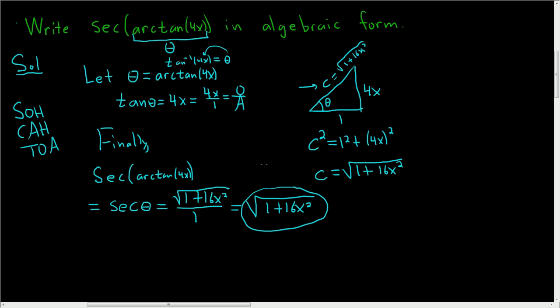And that's the final answer. So to recap, step 1, call this theta. Step 2, rewrite it. Think of this, draw a triangle. Fill in the triangle. And the final step, just go back, write down what you started with. Keep in mind that this is now your theta, and then use the triangle to rewrite secant of theta. And that's it.